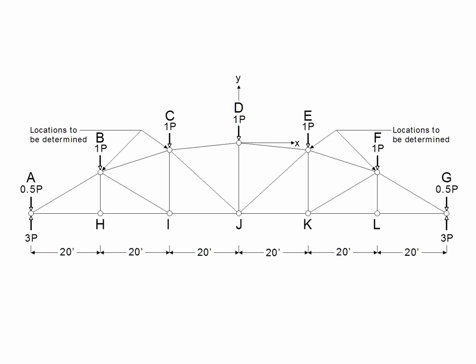This tells us the location of all the joints except for b, c, e, and f, where we don't know the vertical coordinates. But that's what we will need to know in order to determine the shape of the top cord.